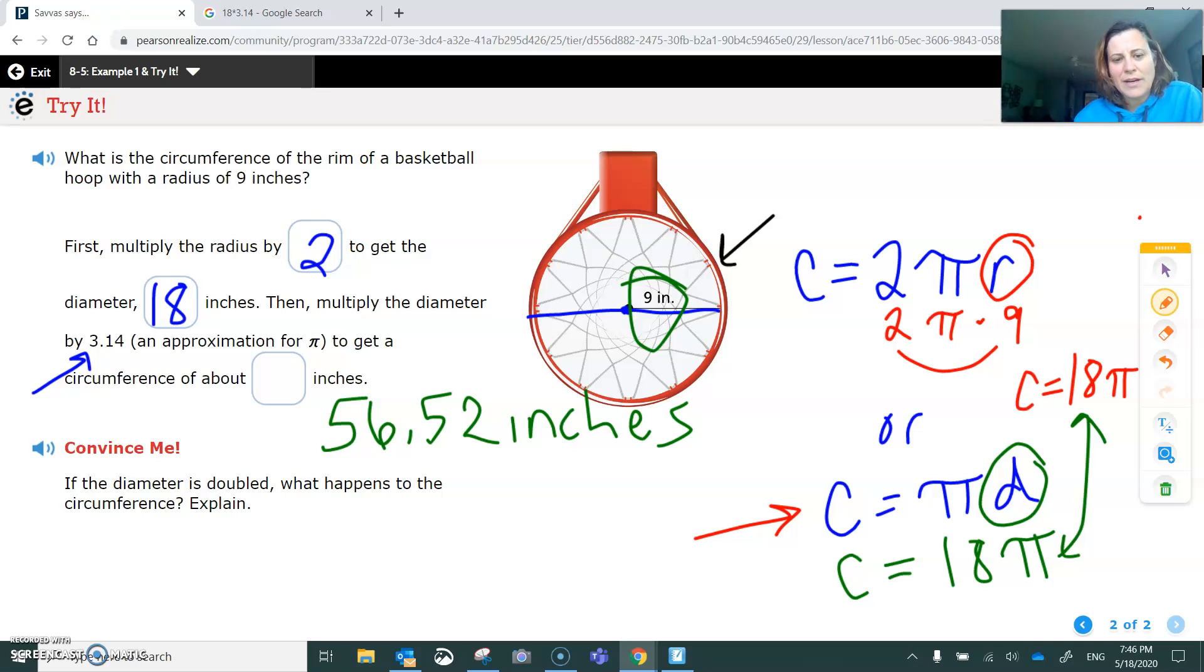So if the diameter is doubled, what happens to the circumference? Well, in this problem, the diameter was 18, so if we're not sure what that answer is, we could just try it. 18 doubled is 36.